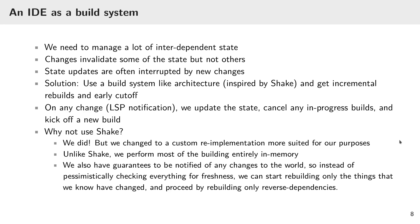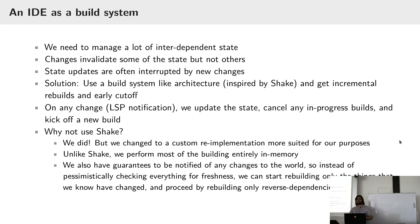Shake cannot resume these things, so it's slower in some sense and has to be much more pessimistic than us. This is why we switched to a custom build system. The API is still very Shake-inspired and looks a lot like Shake because we maintain compatibility — you don't want to change the API while you're replacing the build system. But it's entirely custom.